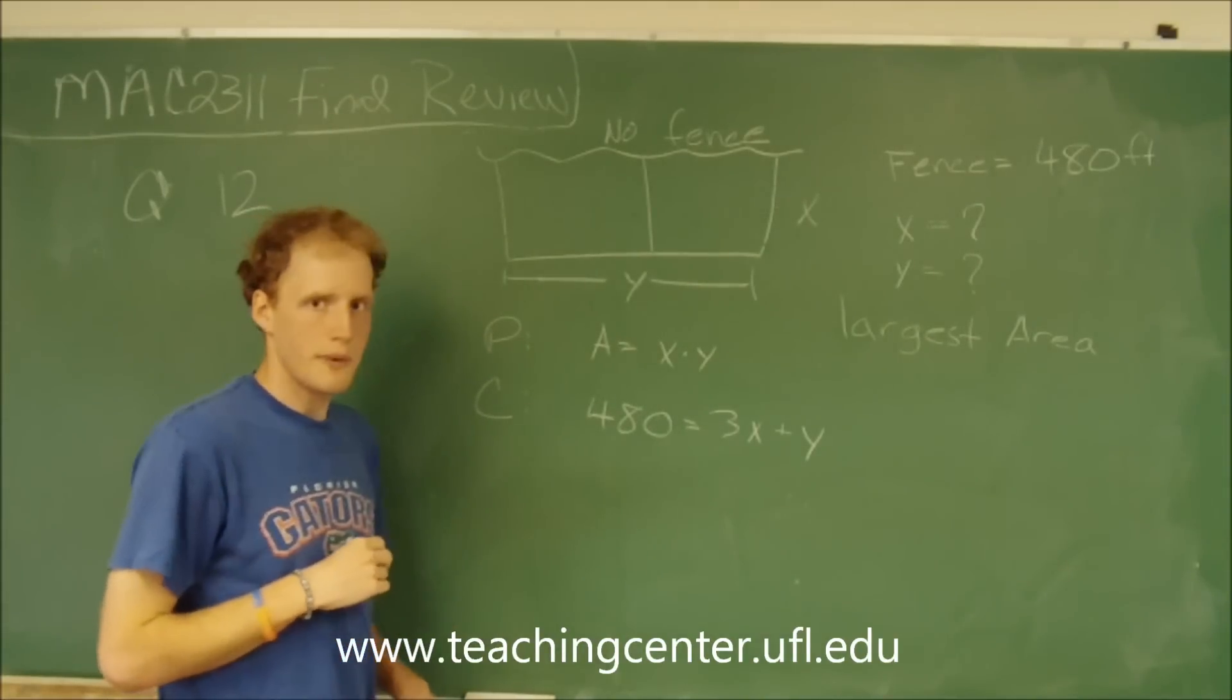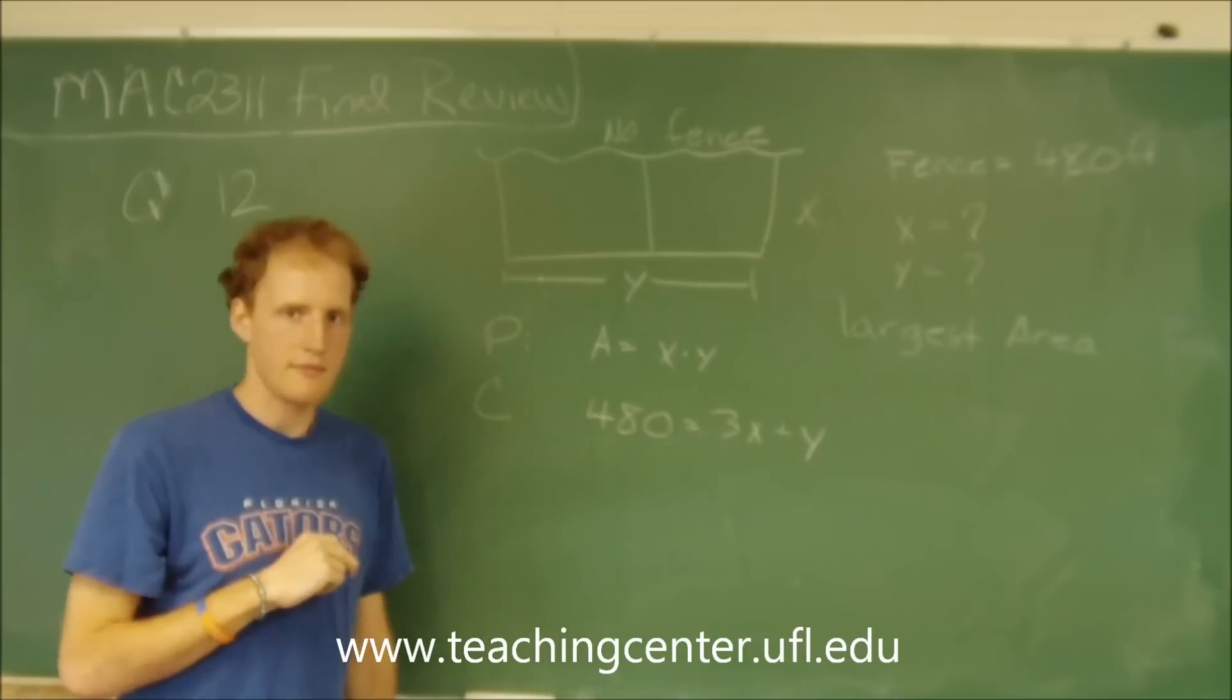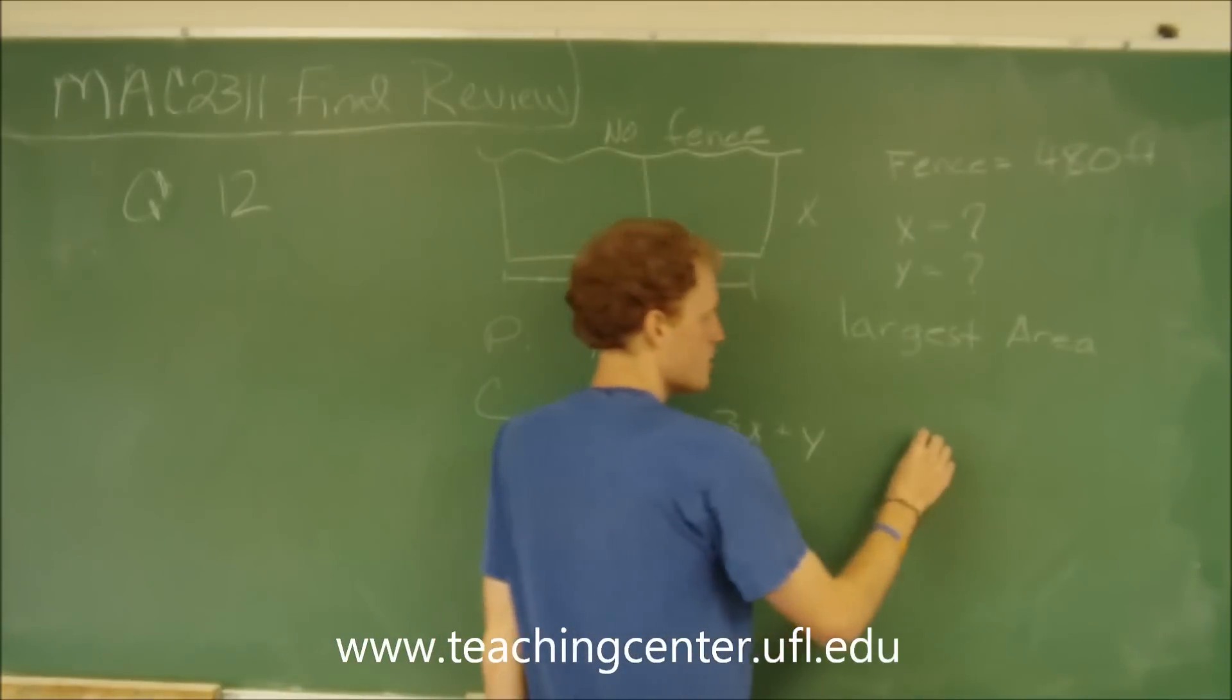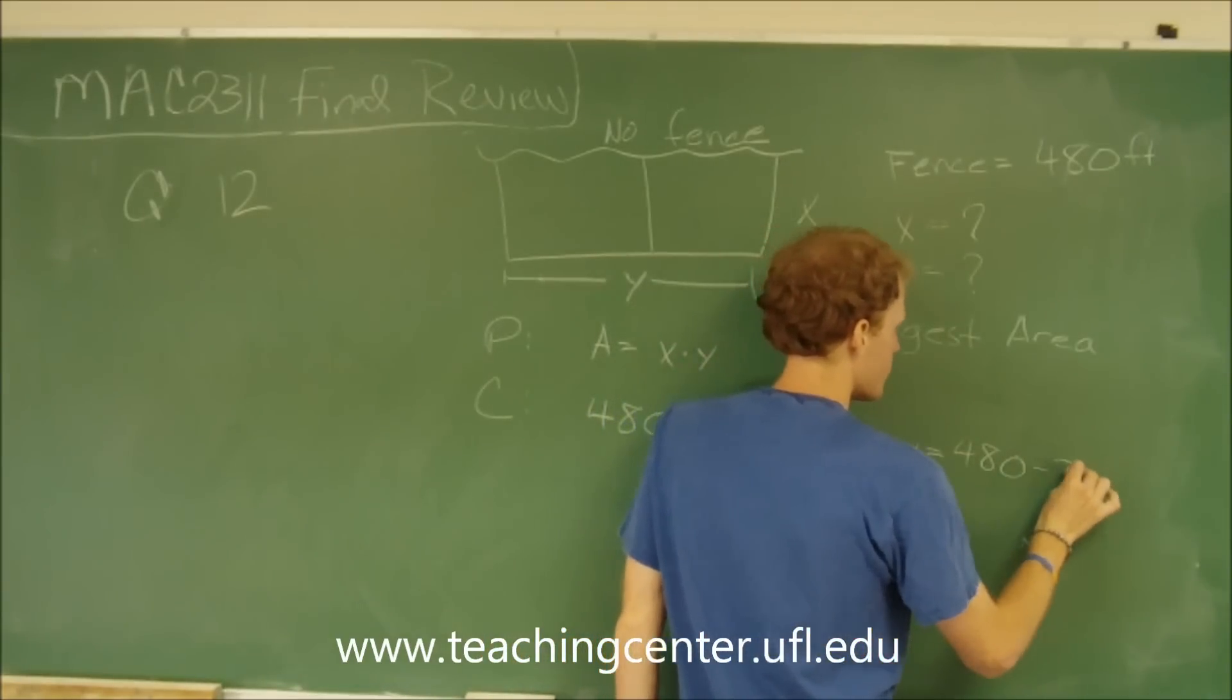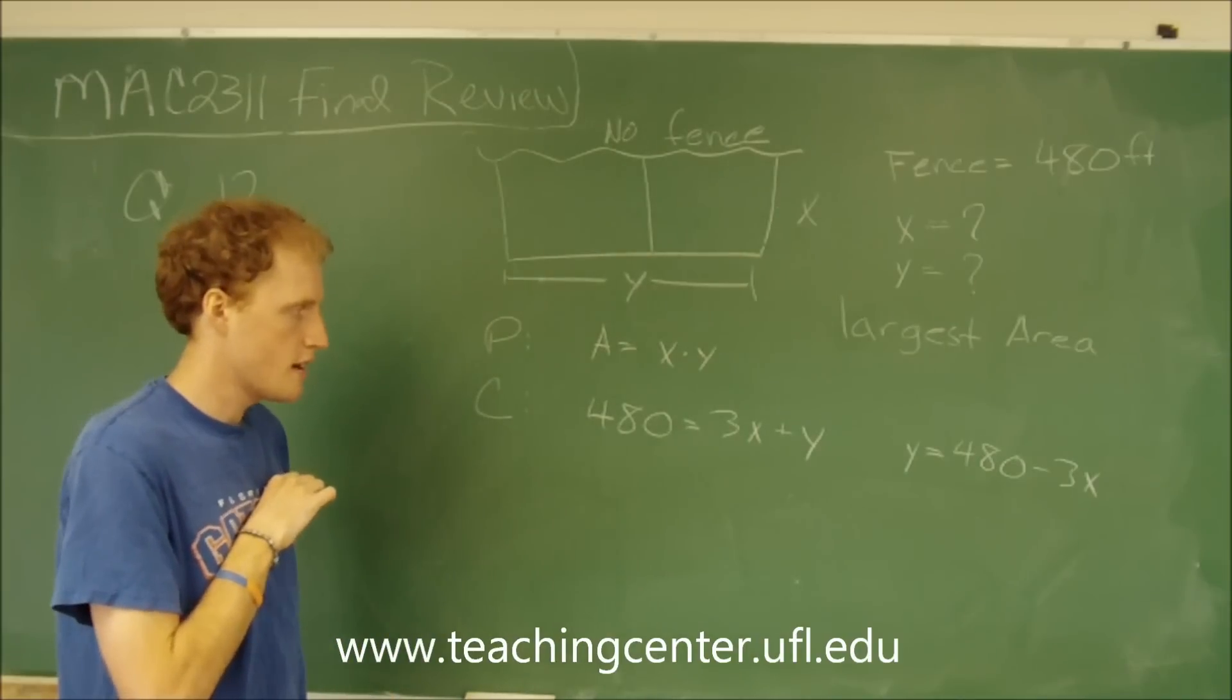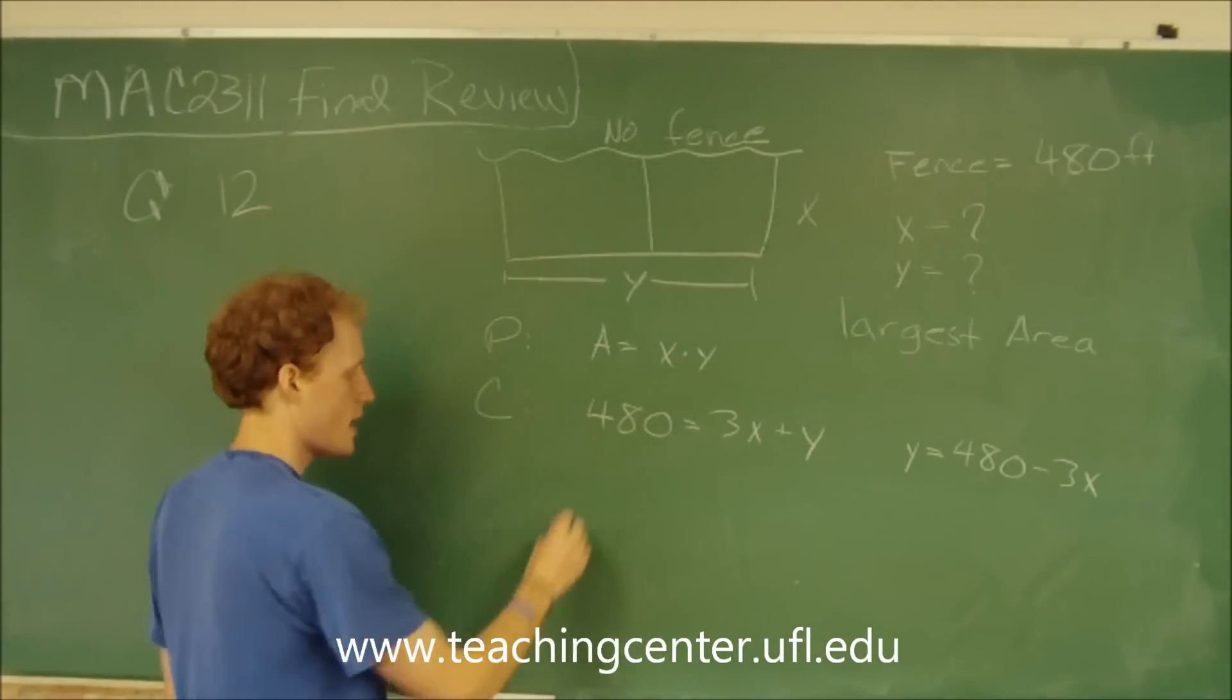So now what we do is we rearrange the constraint and then plug it into the primary function. So I'm going to solve for y. So y is going to equal 480 minus 3x.